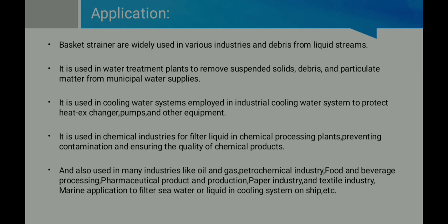In heat exchangers and pumps, the basket strainer helps protect the equipment from unwanted material entering inside. It removes unwanted particles from the process, preventing challenges that could damage heat exchangers or pumps. In chemical industries, it is used to filter liquid in chemical process plants, preventing contaminants and ensuring the quality of chemical products. During chemical reactions, solid particles are present and the basket strainer helps remove them from the piping system.